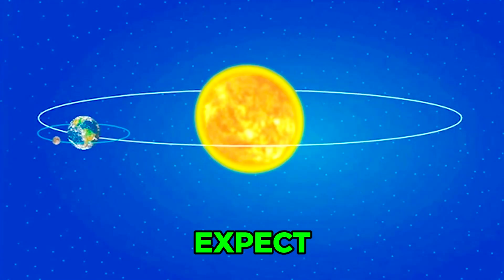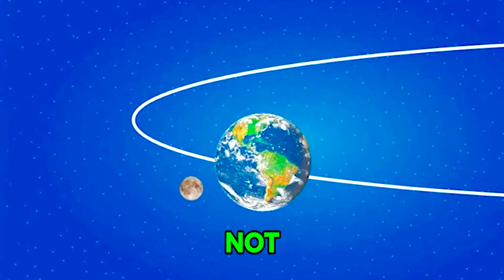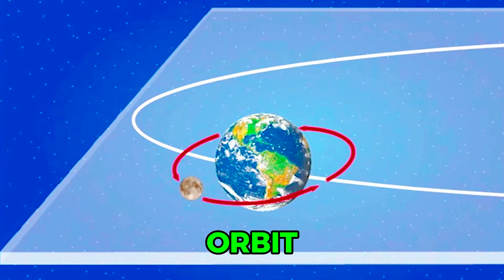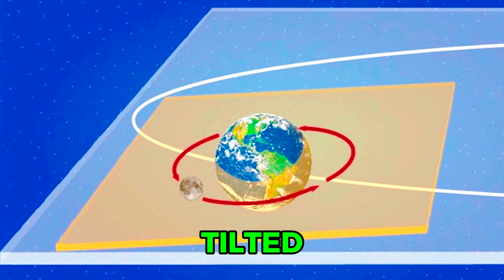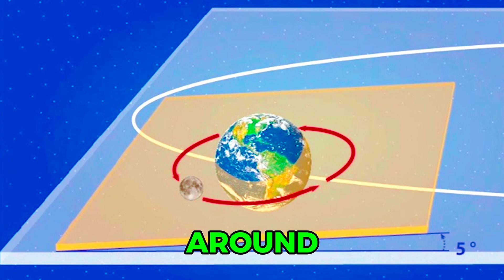One might expect that lunar and solar eclipses would occur every month as the Moon orbits the Earth. This does not happen because the Moon's orbit is actually tilted by a little more than 5 degrees relative to the Earth's orbit around the Sun. It is rare that the Moon is in the Earth's shadow during a full Moon, or between the Earth and Sun during a new Moon.